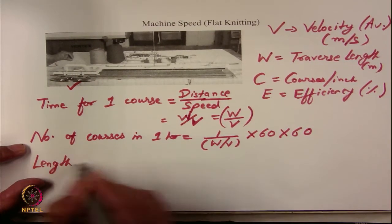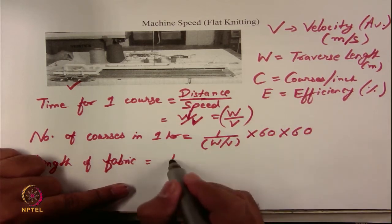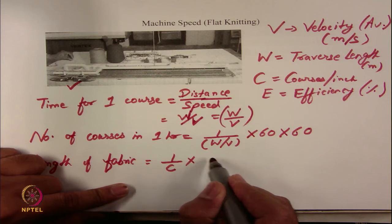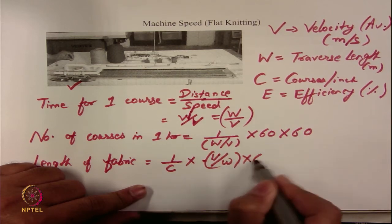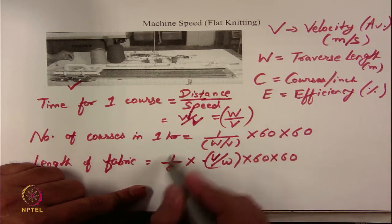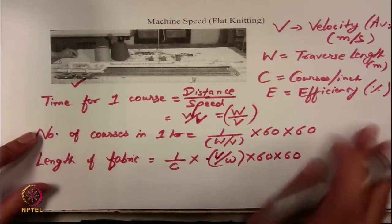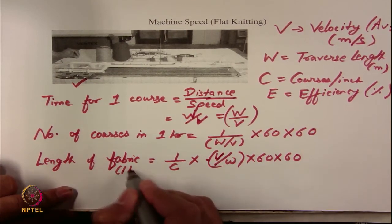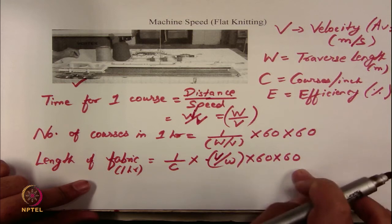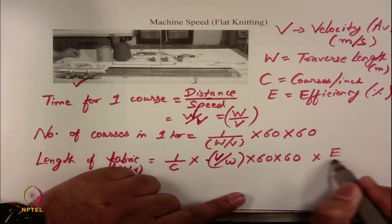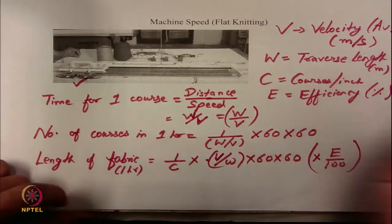Now you can find the length of fabric. Length of fabric equals course spacing multiplied by number of courses. Course spacing is 1/C, and the number of courses per hour is V/W × 3600. So the length of fabric produced in 1 hour is (1/C) × (V/W) × 3600. Since the machine runs only for a certain percentage of the time, you multiply by efficiency: × E/100. This accounts for downtime — if the worker is resting or the machine is idle.